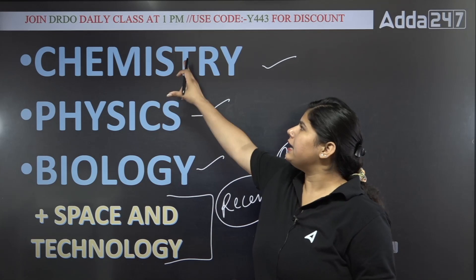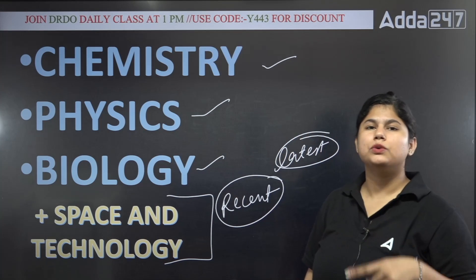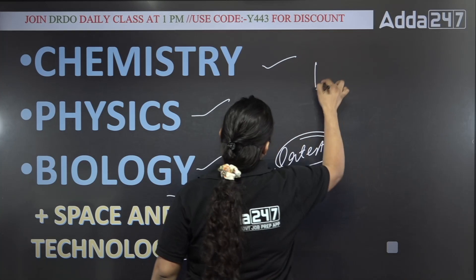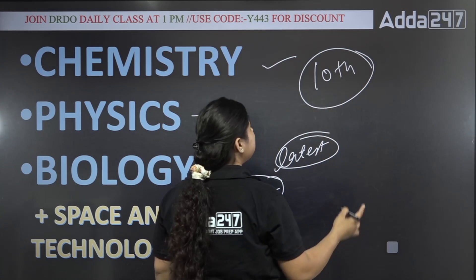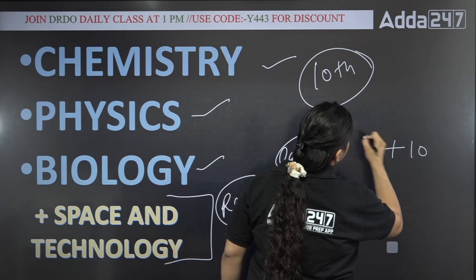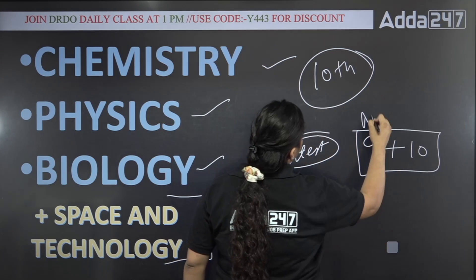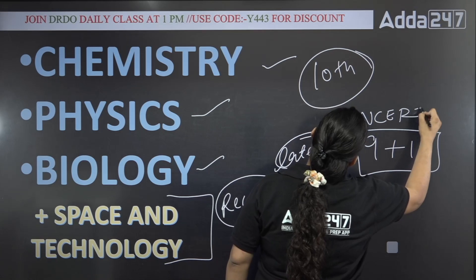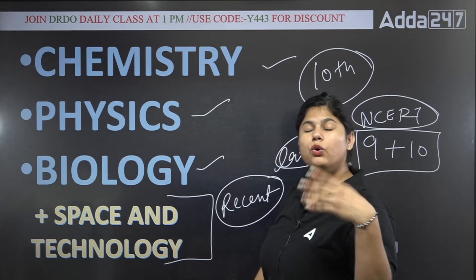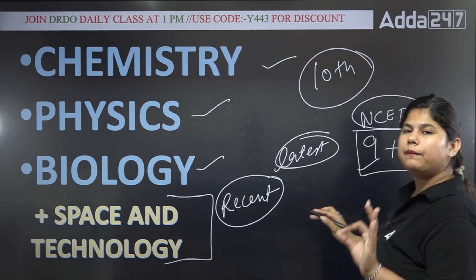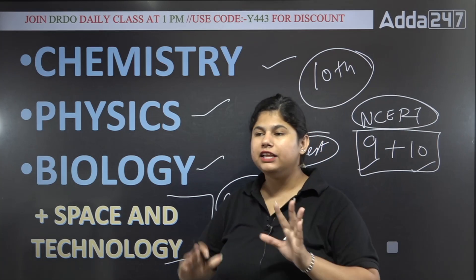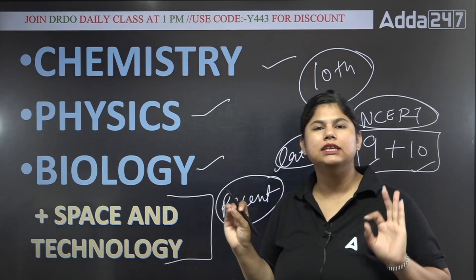If I talk about these three subjects that you have to study, the most important thing is the 10th level. I will say 9th and 10th level. If you study these two classes, if you study NCERT in science, then you will be on top. You have to study only 9th and 10th level for science. You don't have to go anywhere. You don't buy books.